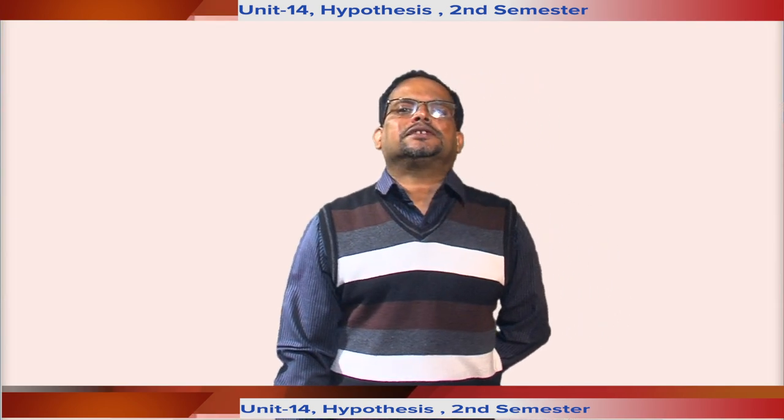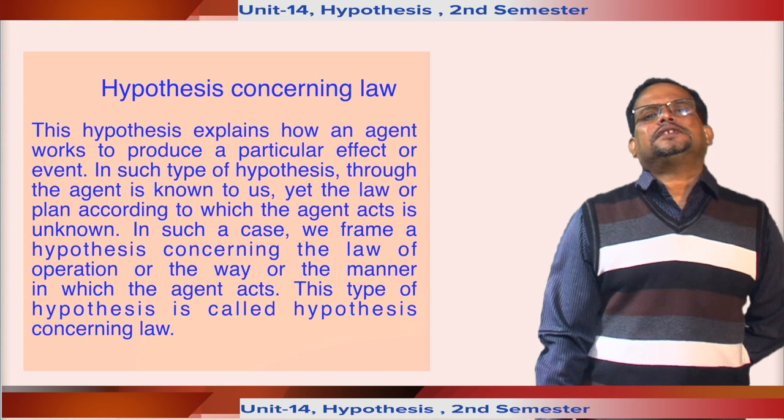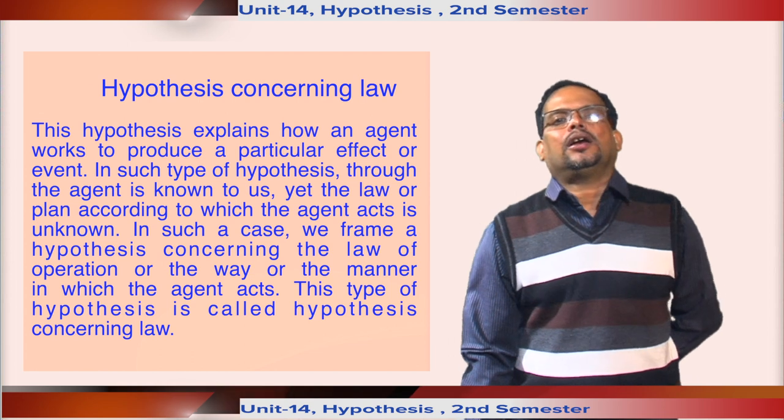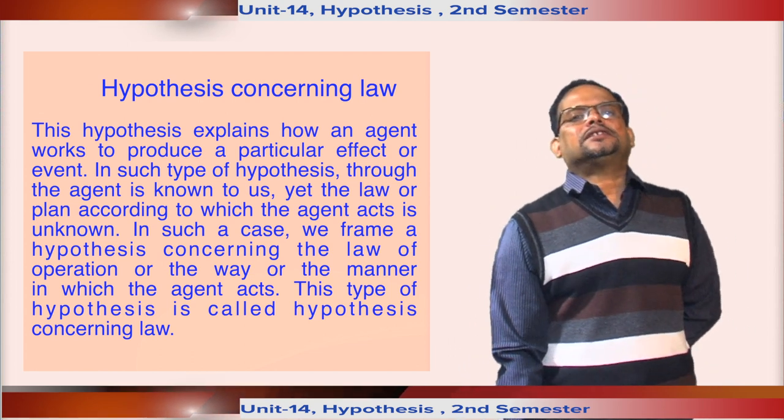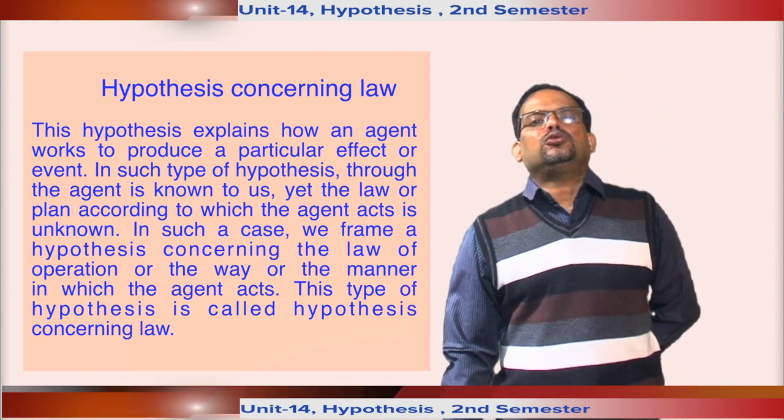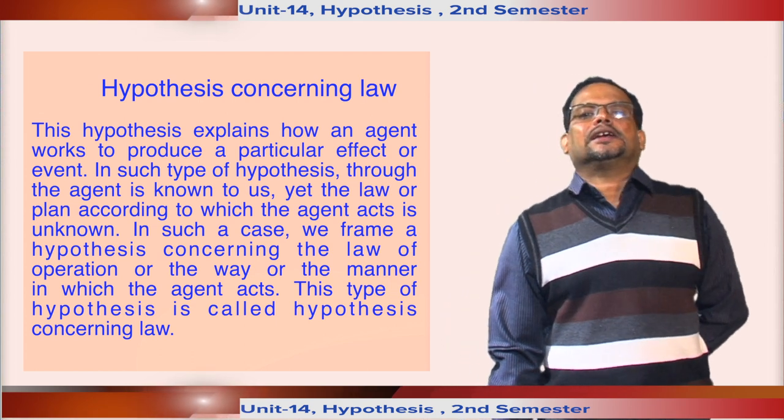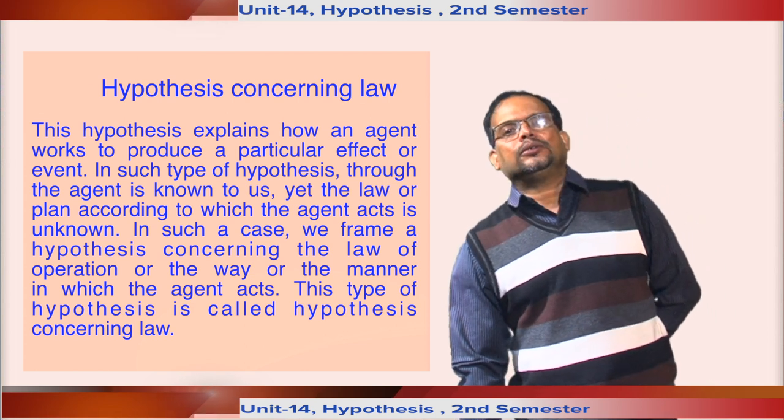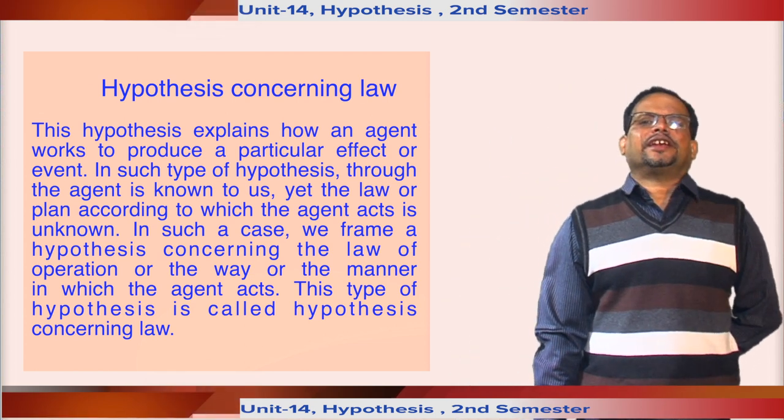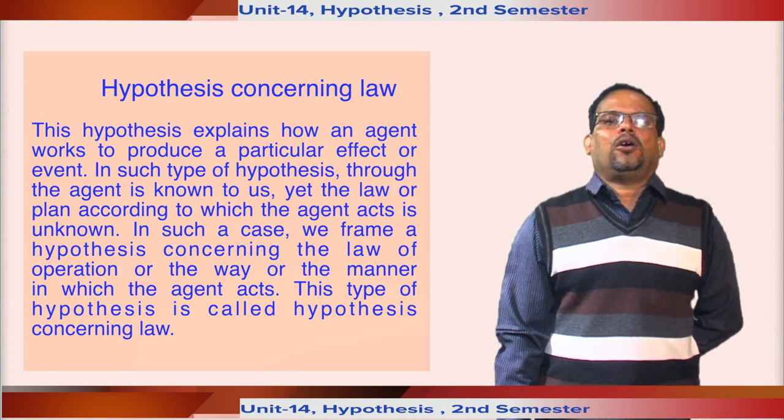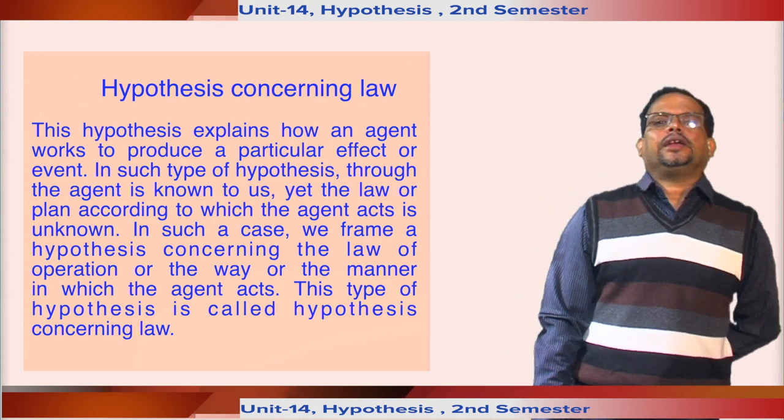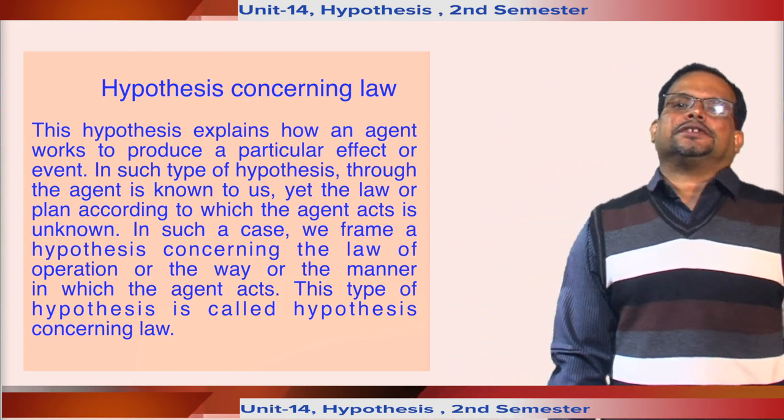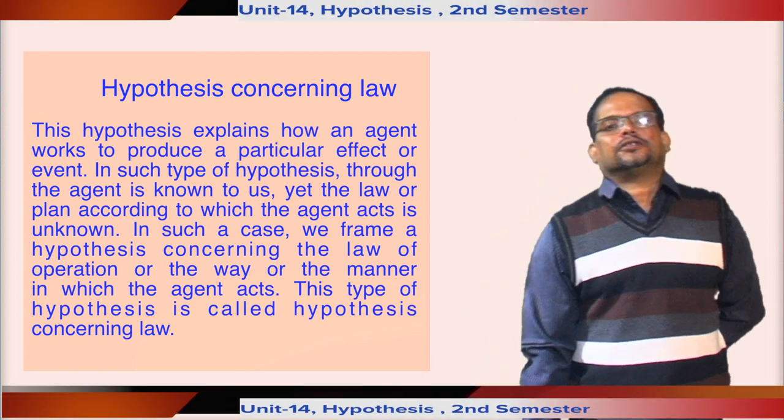You see hypothesis concerning law. This hypothesis explains how an agent works to produce a particular effect. In such type of hypothesis, though the agent is known to us, yet the law or plan according to which the agent acts is unknown. In such case, we frame a hypothesis concerning the law of operation or the way or manner in which the agent acts. This type of hypothesis is called hypothesis concerning law.